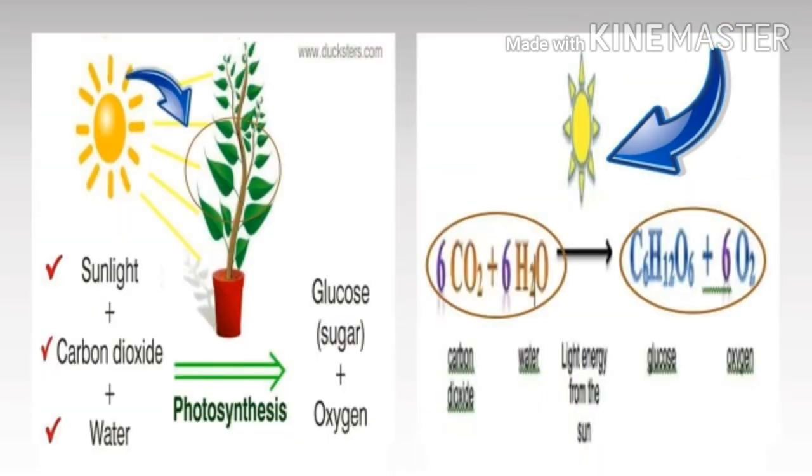Photosynthesis is a process of food making done by plants and other autotrophic organisms. The presence of chlorophyll enables these organisms to make their own food. The autotrophic organisms require light energy, carbon dioxide, and water to make food.